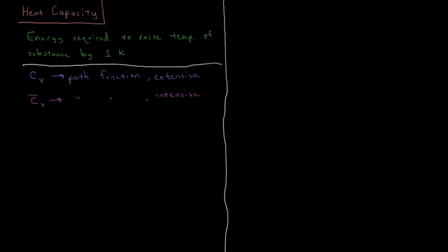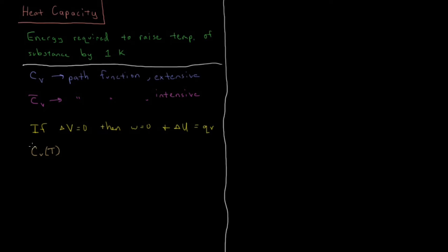If we have a constant volume process where ΔV equals zero between some initial and final conditions, then we didn't do any work, so the work is going to be zero. Therefore, the change in internal energy for a closed system is going to be just heat, QV. For the constant volume heat capacity CV, which is a function of temperature, we can define this mathematically as the partial derivative of internal energy with respect to temperature at constant volume.